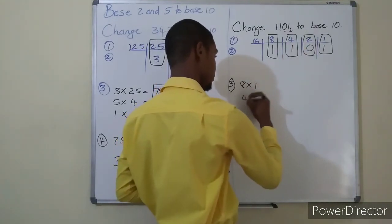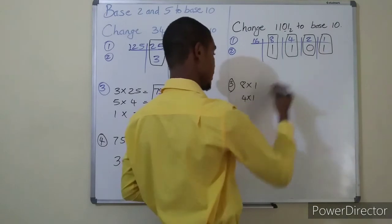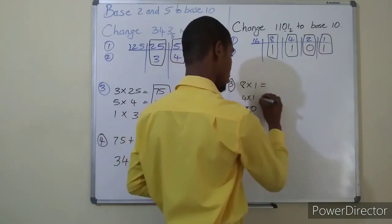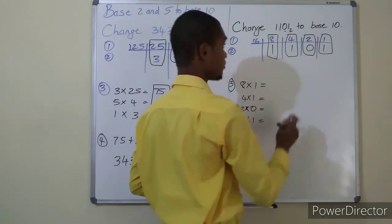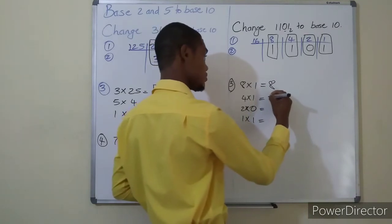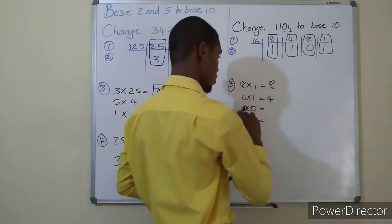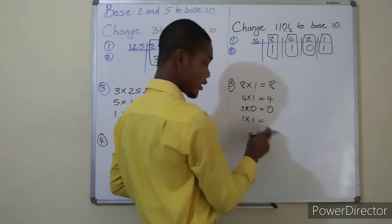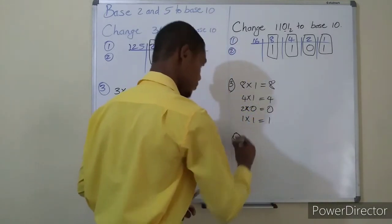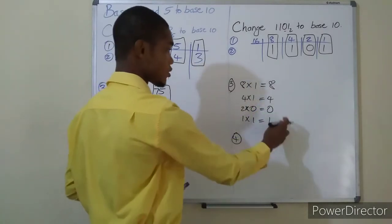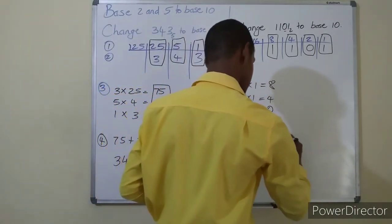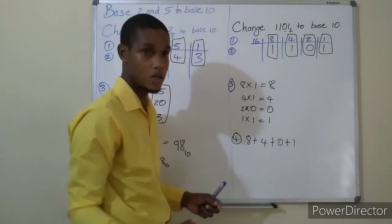So that's eight times one, four times one, two times zero, and one times one. Eight times one is eight, four times one is four, two times zero is zero, and one times one is one. And then now you reach step four, which is to add the products.